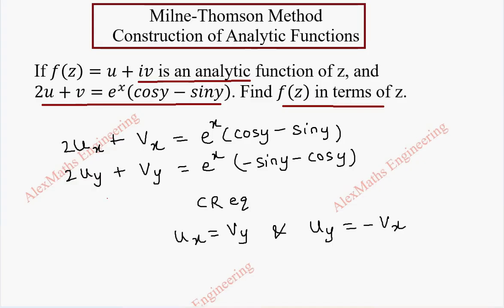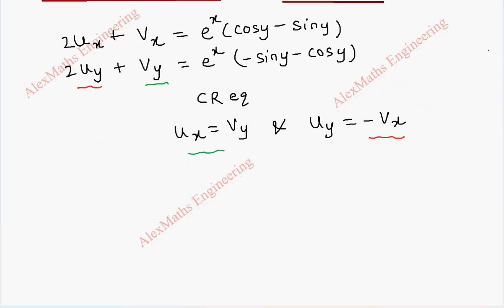Using the CR equations, this uy is changed into minus vx and this vy is changed into ux. So the first equation becomes 2ux plus vx equal to e to the power x into cos y minus e to the power x into sin y.